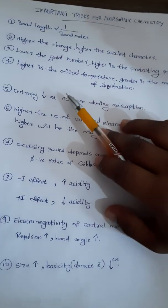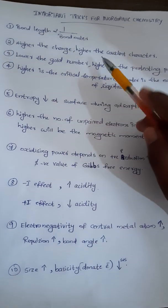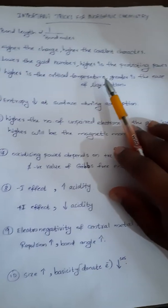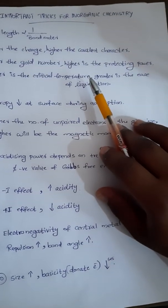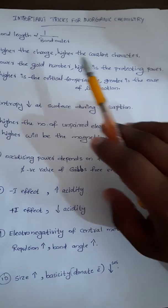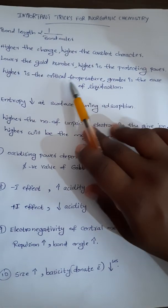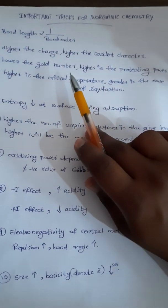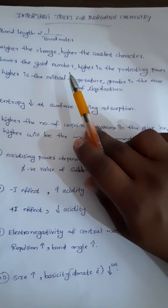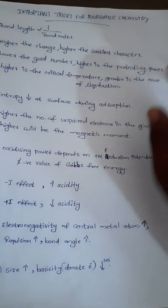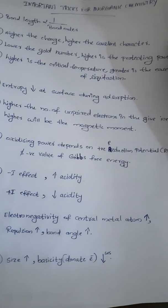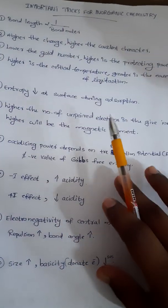Next point: lower the gold number, then higher will be the protecting power. So a lower gold number means greater protecting power.